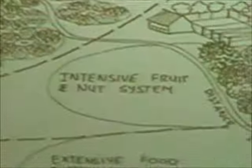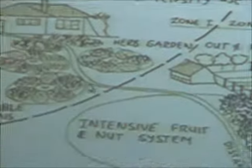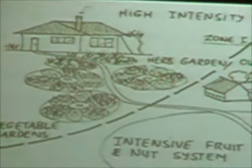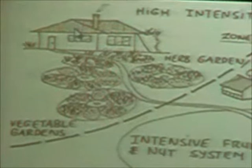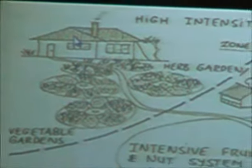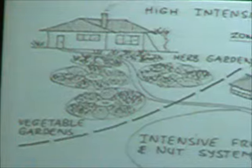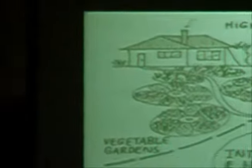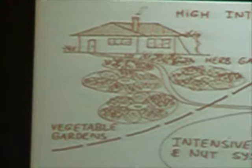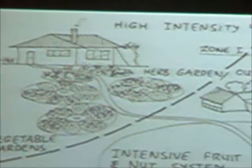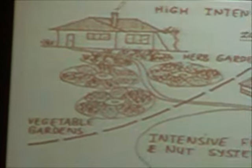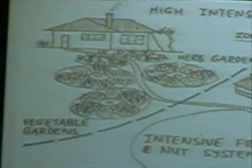Permaculture design uses zones, distinguished by the numbers 0 to 5. First we have zone 0, which is the home area, and basically you want to be using something like solar heating and green design to maximize efficiency and be environmentally friendly. Zone 1 would be the kitchen garden, which would be the plants that require a lot of attention, and this would potentially include herbs,